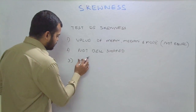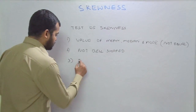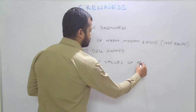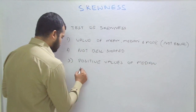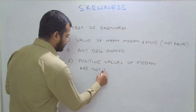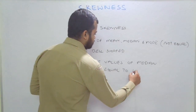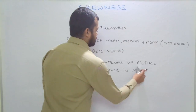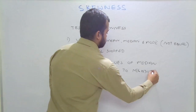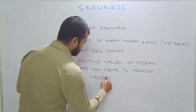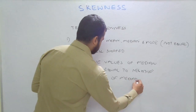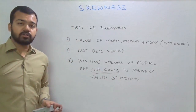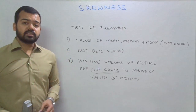The third test: the positive deviations from the median are not equal to the negative deviations from the median. So when the positive values of the median are not equal to the negative values of the median, we get the sign that the series is skewed.